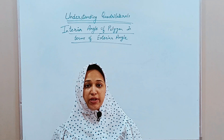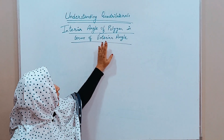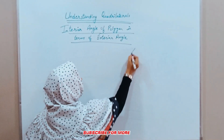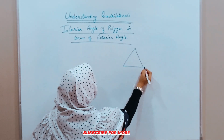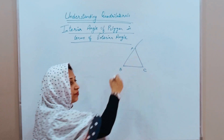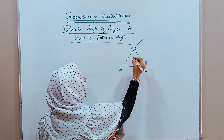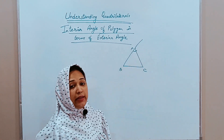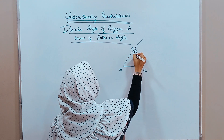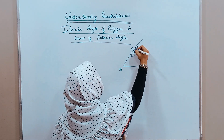Hello everyone, welcome to Muneera Shrine Academy. We are learning co-interior rules. In this video I will explain interior angles of a polygon in terms of exterior angles. Suppose we have a polygon with three sides, so it is a triangle — A, B, C — we have three sides. Talking about interior angles: interior angles are those which are inside the polygon, so angle A is an interior angle. I will name it as angle I to indicate it is an interior angle.